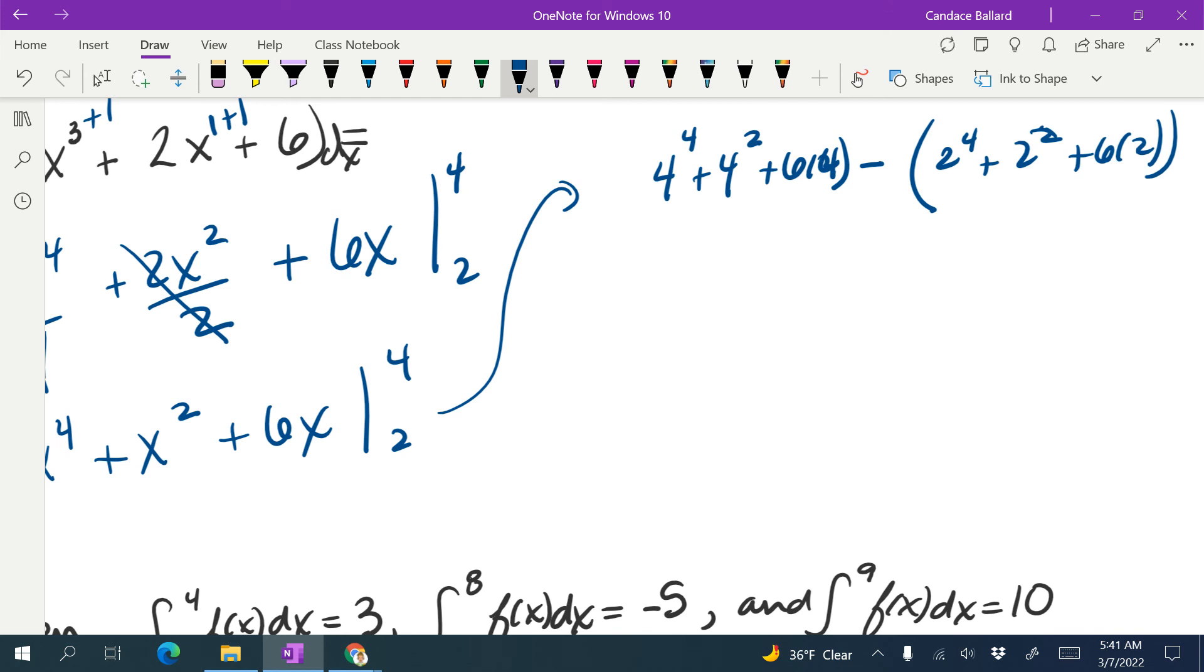All right, I am going to use the help of a calculator. So 4 to the 4th is 256, 4 squared is 16, 6 times 4 is 24 minus parentheses. 2 to the 4th is 16 plus 2 squared is 4 plus 6 times 2 is 12.